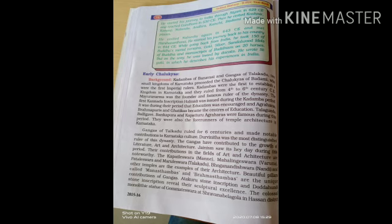The early Chalukyas: In the background of Kadamba of Banavasi and Ganga of Talakadu, two small kingdoms of Karnataka, emerged the Chalukyas of Badami, who were the first imperial rulers of Karnataka. Kadamba was the first established kingdom of Karnataka. They ruled from the 4th to 6th century CE. Mayura Varma is the founder of this famous dynasty.